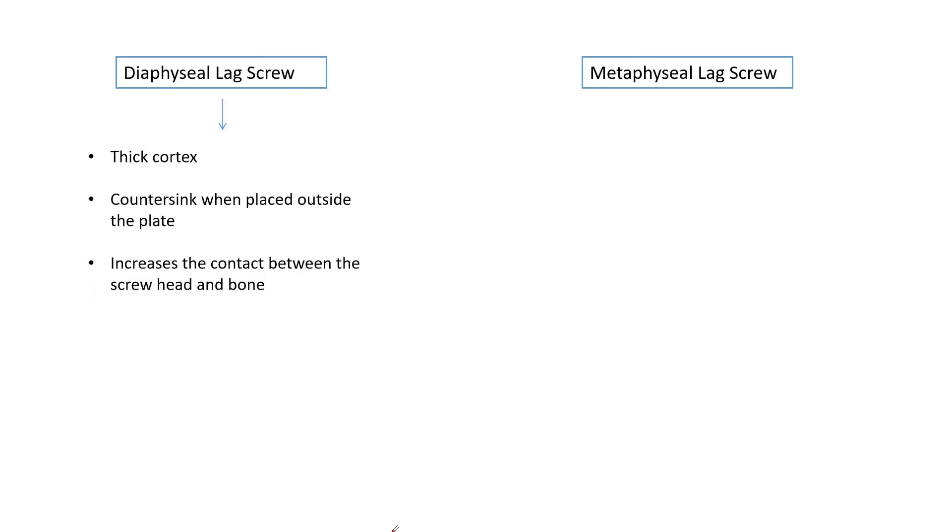Metaphyseal versus diaphyseal lag screw. In the diaphyseal area, it has a thick cortex. So we use a countersink when the lag screw is placed outside the plate. This increases the contact area between the screw head and the bone and improves the stress transfer from the screw head to the bone.